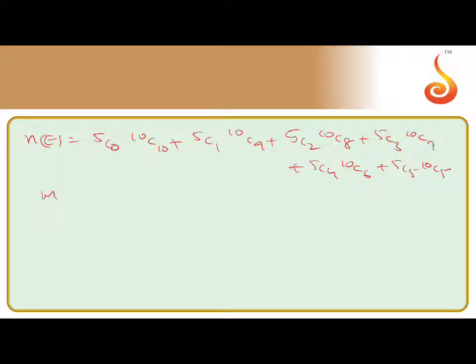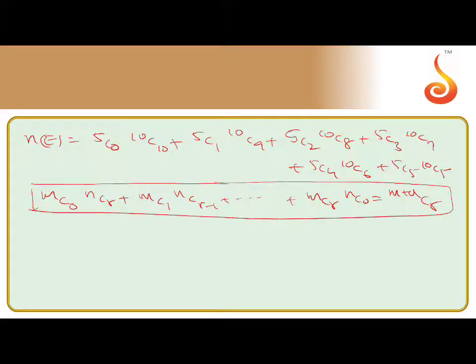We have one formula: mC0 times nCr plus mC1 times n-1Cr-1 and so on plus mCr times nC0 equals m plus n Cr. So now using this formula, 5 plus 10 Cr where r is 10, that is 15C10, the same as 15C5.